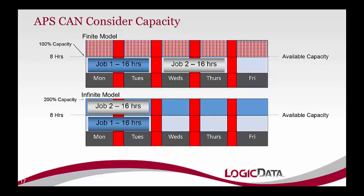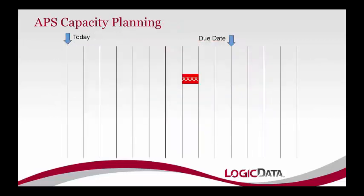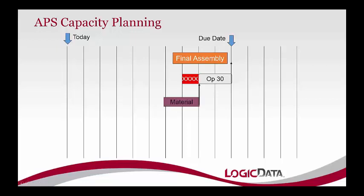Here's a practical example: on a specific day, work center 20 is fully booked with no capacity available — perhaps equipment is down for maintenance. We take our final assembly and try to backward plan it. Operation 30 at work center 30 can occur with no constraints. But for operation 20, APS sees it can't run on those dates and moves it back a day, creating a gap in the routing between operations 20 and 30. APS then plans operation 10 and its materials, working around the capacity constraints to still make the job happen in time.